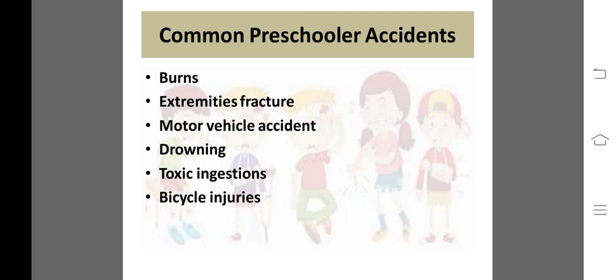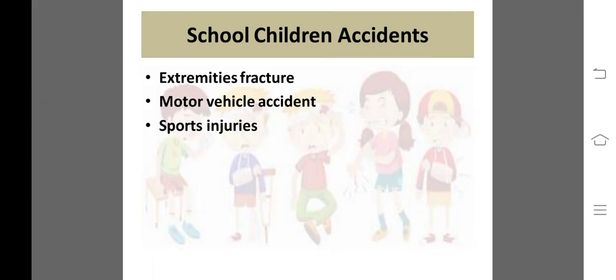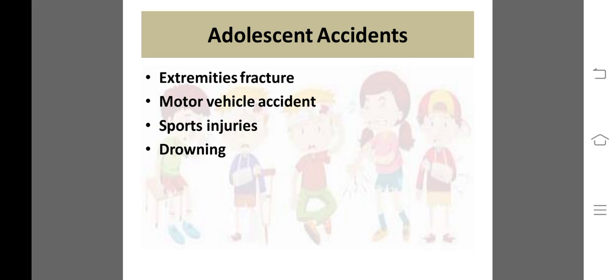Common pre-schooler accidents میں burns، extremity fractures، motor vehicle accident، drowning، اور toxic ingestion شامل ہیں۔ School-going children میں extremity fractures، motor vehicle accident، road crossing سے RTA، اور sports injury common ہے کیونکہ school-going children زیادہ sports میں حصہ لیتے ہیں۔ Adolescents میں بھی extremity fractures اور motor vehicle accident common ہیں۔ ہر age stage پر بچہ جس بھی activity کے contact میں آئے اور proper طریقے سے نہ کر پائے تو injury ہو سکتی ہے۔